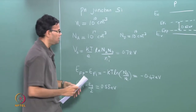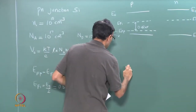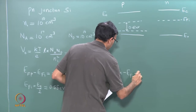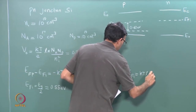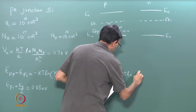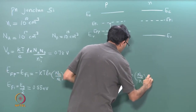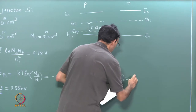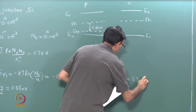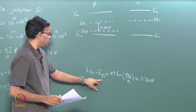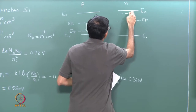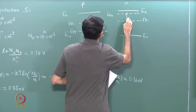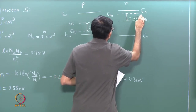We can do the same calculation for the n-side. E_fn minus E_fi is kT ln of n_d over n_i. Once again we can substitute in the values and we get this to be 0.36 electron volts above the intrinsic Fermi level. So in this case E_fn is 0.36 volts above E_fi.